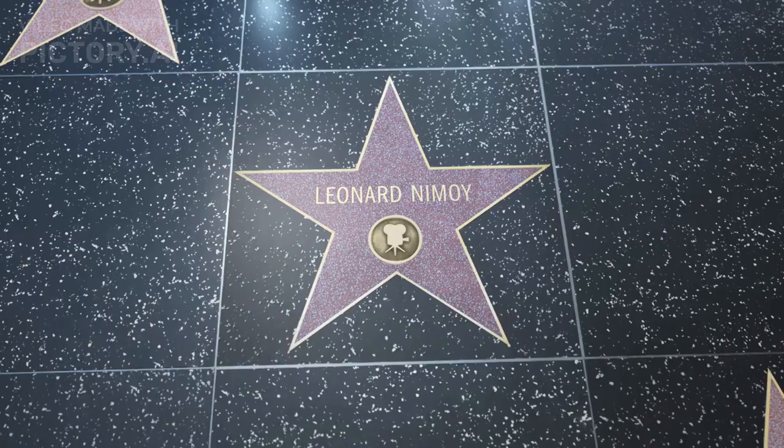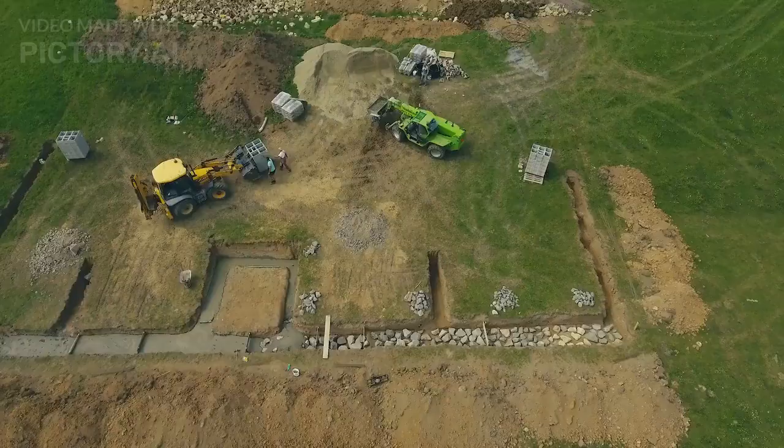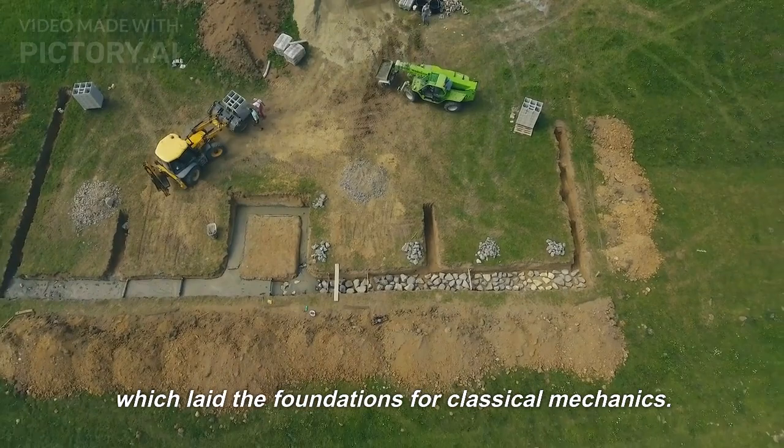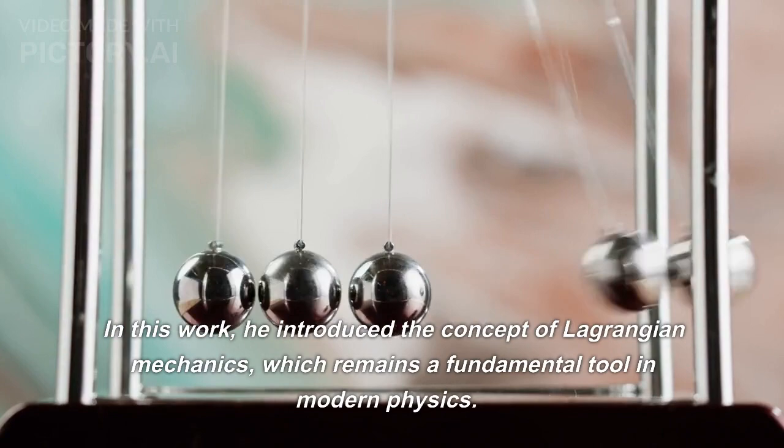In 1766, Lagrange published his first major work, Mechanique Analytique, which laid the foundations for classical mechanics. In this work, he introduced the concept of Lagrangian mechanics, which remains a fundamental tool in modern physics.